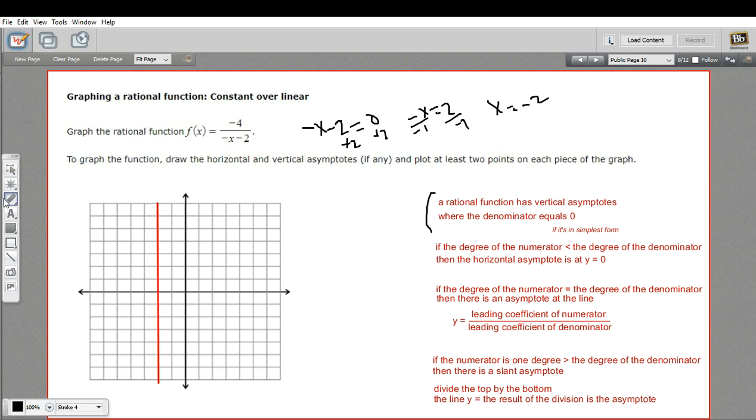then the horizontal asymptote is at y equals 0. So we can just plot that asymptote along this axis. All right. So we've got our asymptotes, and it's divided this graph up into four areas.